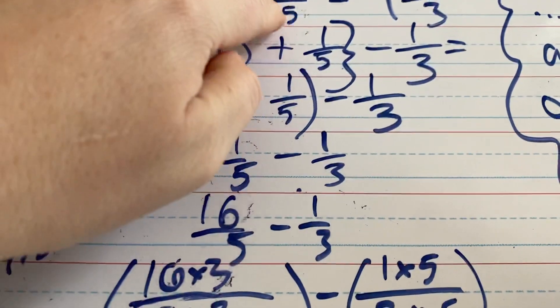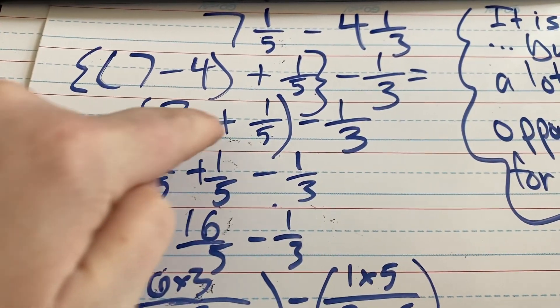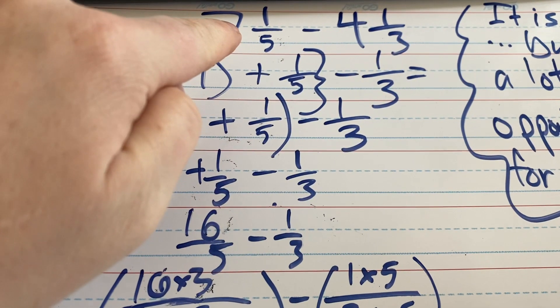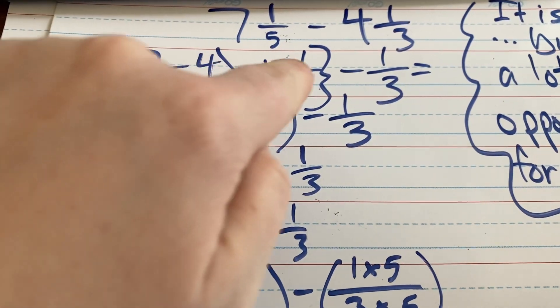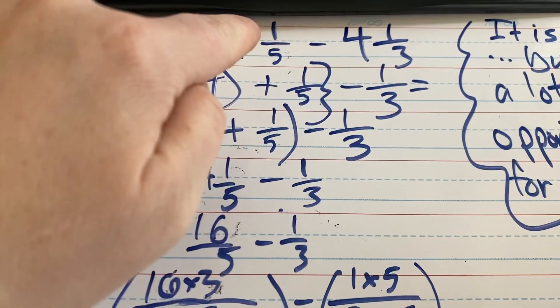But, you have to remember, this number here, the 1/5, is added with the 3. Okay? That's part of the number that's being taken away. So, it's not as simple as take away the whole numbers, then take away the fractions. No, that doesn't work that way, because that 1/5 is part of the original number that's being taken away.